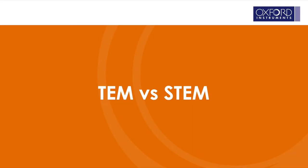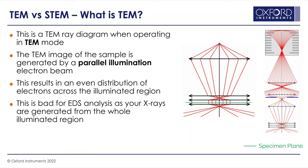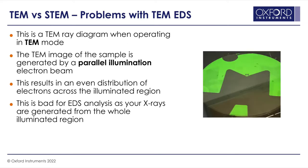TEM versus STEM — what's the difference? In TEM mode, looking at the ray diagram, we have a parallel illumination passing through the sample plane. This means we have an even distribution of electrons passing across the sample at the same time. This is a challenge for EDS because we like to know where our x-rays are being generated from, and if you're illuminating the whole sample, it's quite hard to actually locate that.